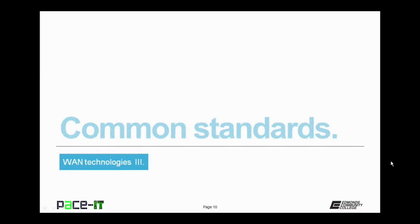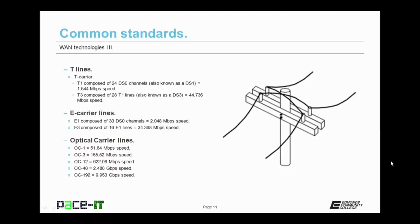Let's conclude with common standards. The standards I'm going to be talking about are the speeds. We begin with T-lines. A T1 is composed of 24 DS0 channels, which are also known as a DS1, and it's capable of achieving speeds of up to 1.544 megabits per second. If that's not fast enough for you, you can lease a T3 line. It's composed of 28 T1 lines. A T3 line is also known as a DS3, and it can achieve speeds of up to 44.736 megabits per second.